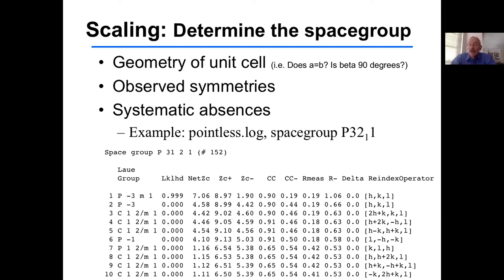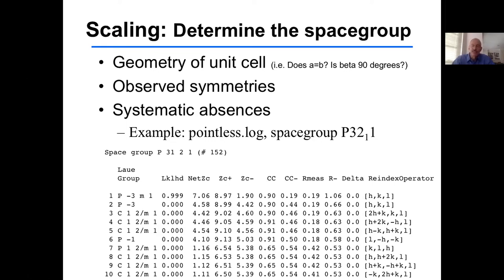Observed symmetries — whether there's a twofold across A, B, or C, a threefold, or a sixfold — are looked for in the integrated intensities and tell us about the space group. Systematic absences along the reciprocal lattice vectors H00, 0K0, and 00L arise from centering operations and screw axes. A program like Pointless inputs integrated intensities and tests all threefolds, twofolds along the A, B, and C axes, calculating a correlation coefficient and likelihood for each possible space group.